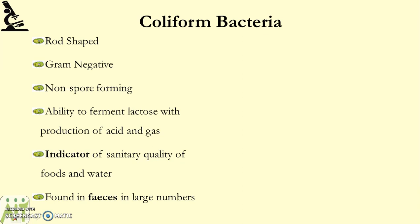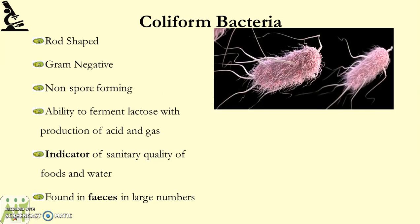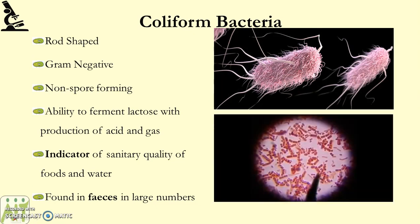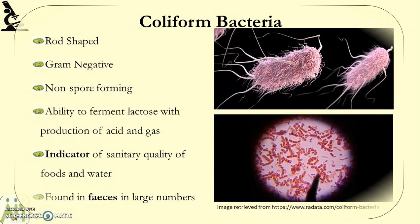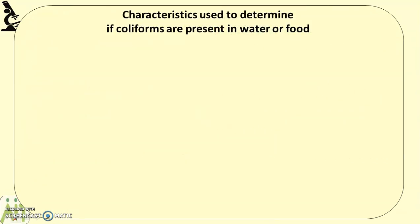Coliforms are an indicator because they are found in feces in large numbers. Not all bacteria found in feces are bad and not all are good, but if bacteria from feces is found in water or food it indicates poor sanitation. As you can see in the images, coliform bacteria are rod-shaped, and in the bottom picture they stain pink — a gram-negative result — indicating a thinner peptidoglycan layer.